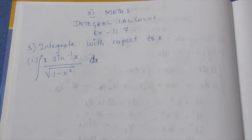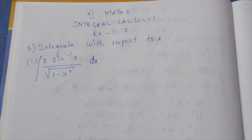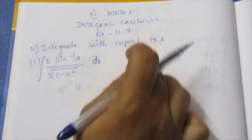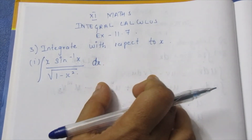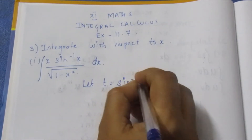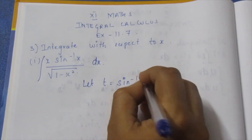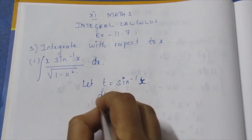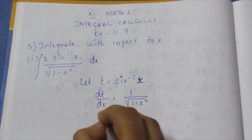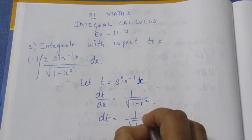If there is a multiply or divide, there is a differentiation. Now, the differentiation of sin inverse x is 1 by root of 1 minus x square. We know that. So let t equal to sin inverse x. Then dt differentiated gives 1 by root of 1 minus x square into dx.